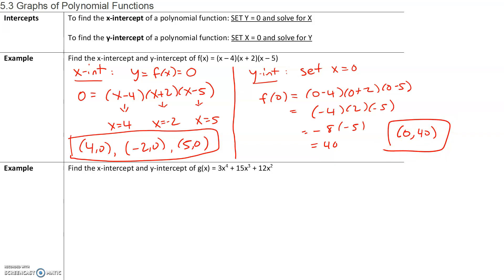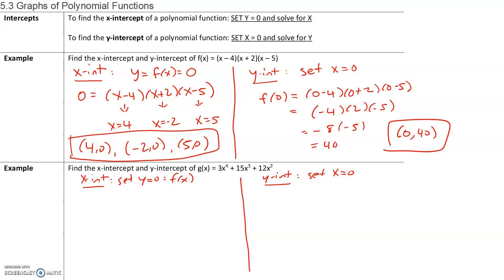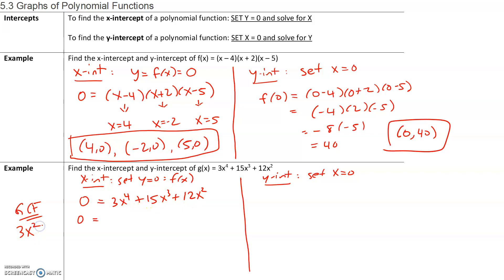In the next example, we want to find the x-intercept and y-intercept. For the x-intercept, we set the y-value equal to 0 — y is the same as f of x. Here it's g of x, so we set the whole left-hand side equal to 0. We have 3x to the 4th plus 15x cubed plus 12x squared. We want to factor by finding the GCF. Between 3, 15, and 12, the largest factor is 3. The highest power we can factor out from the x terms is x squared. So our GCF is 3x squared.